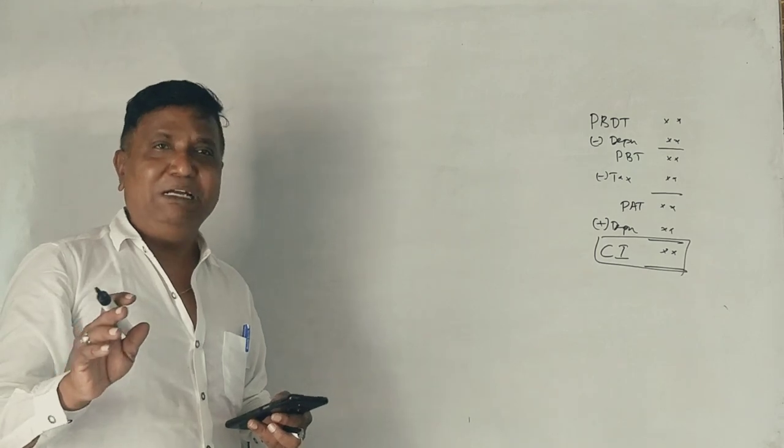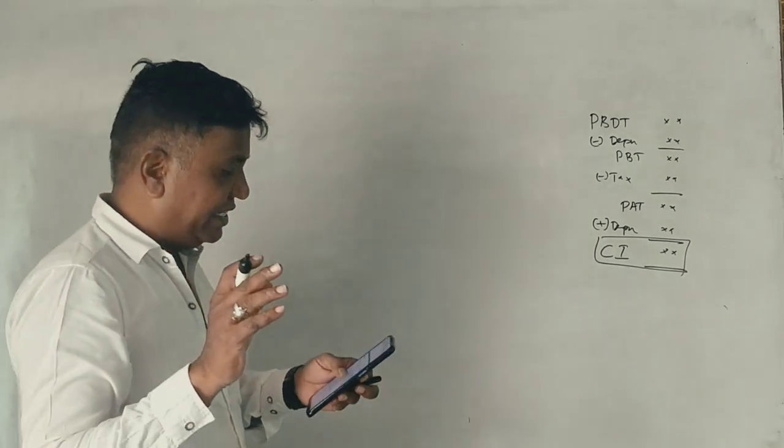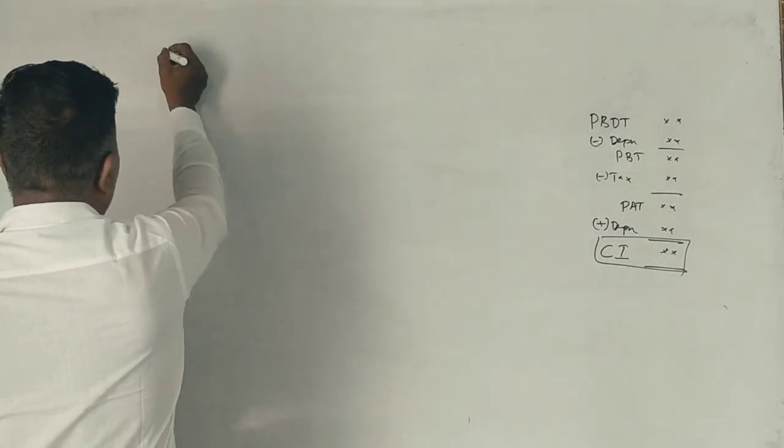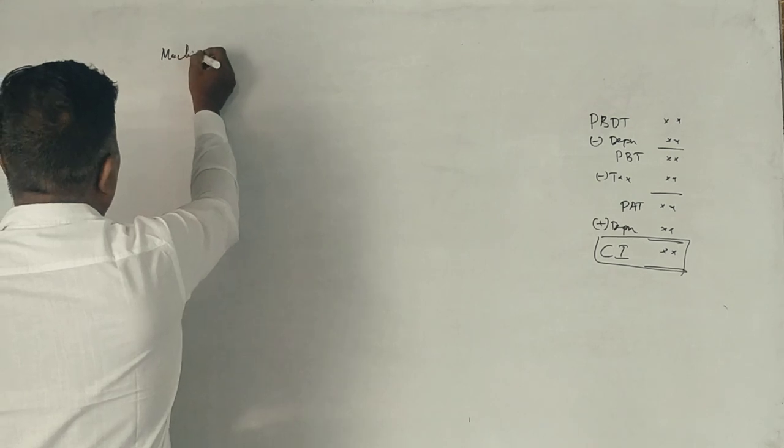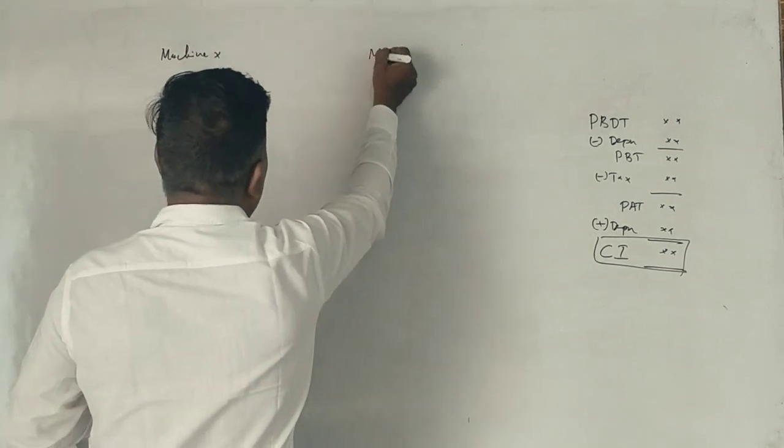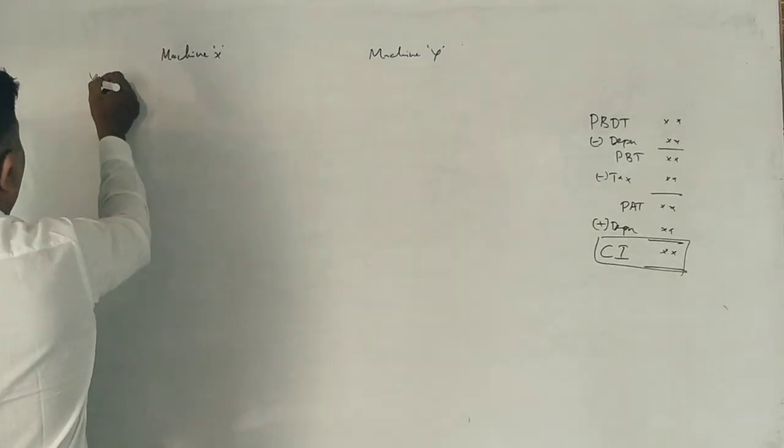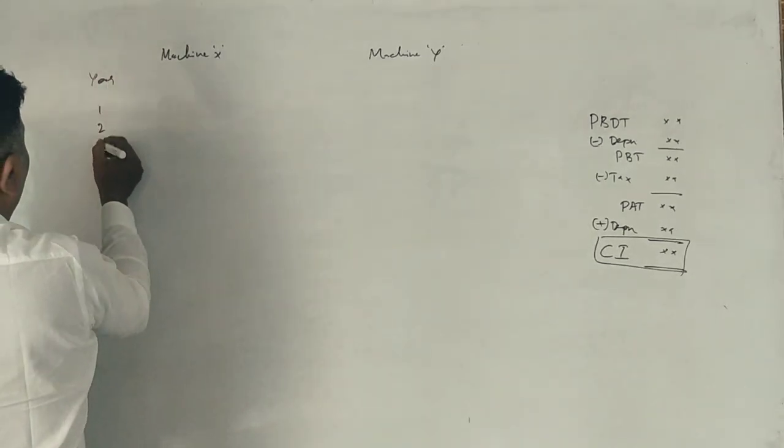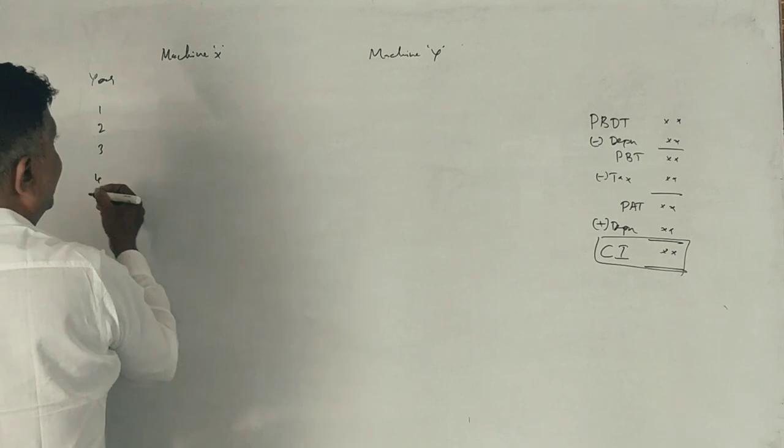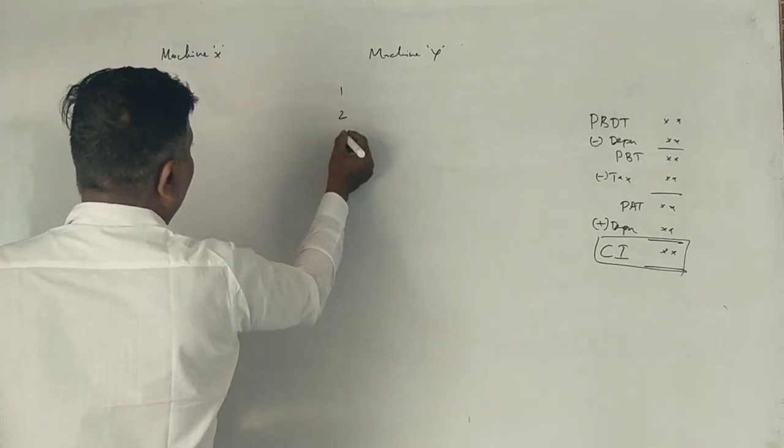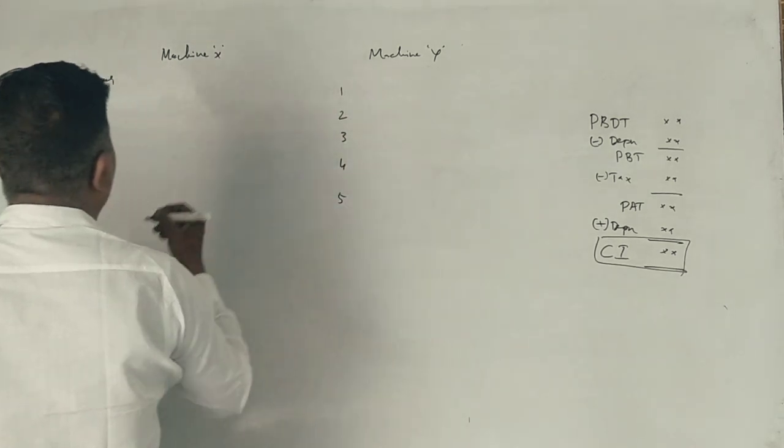Now, you will have a question. This is the machine X and machine Y. Year 1, 2, 3, 4, 5. First cash inflows.